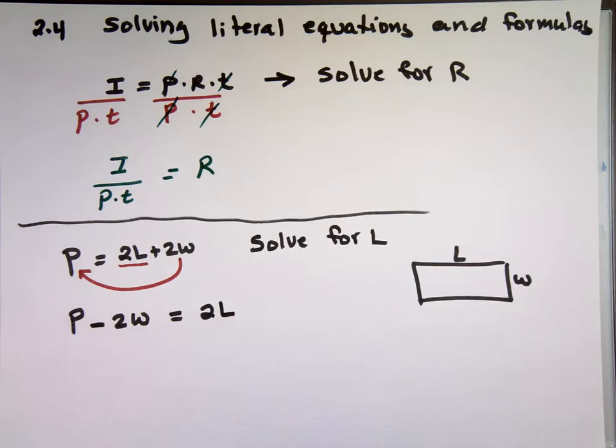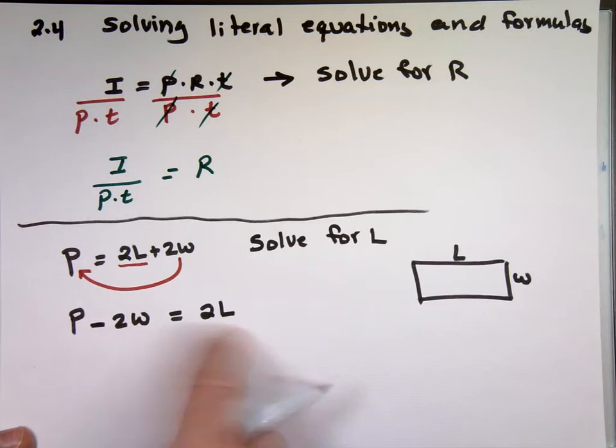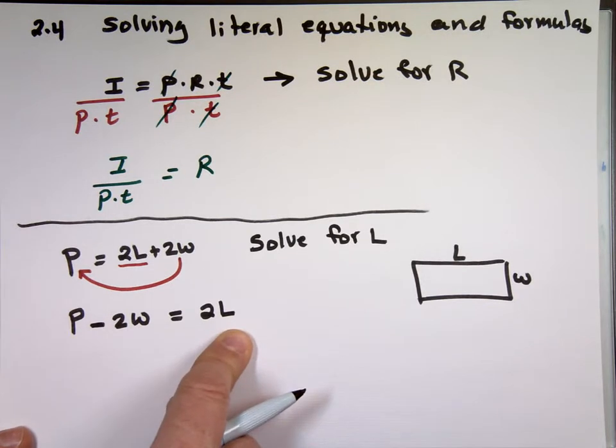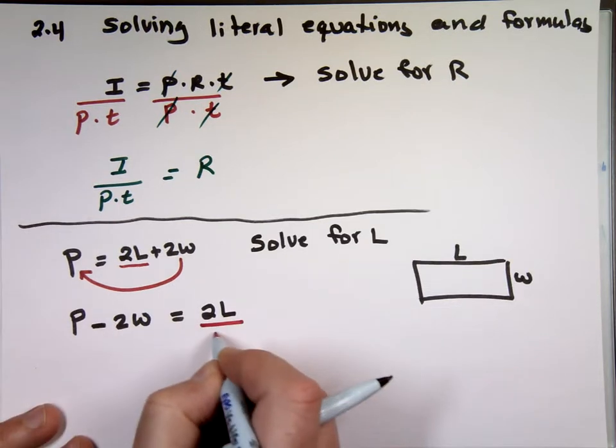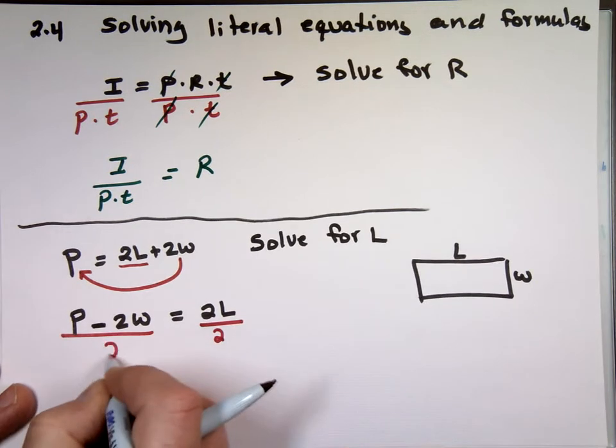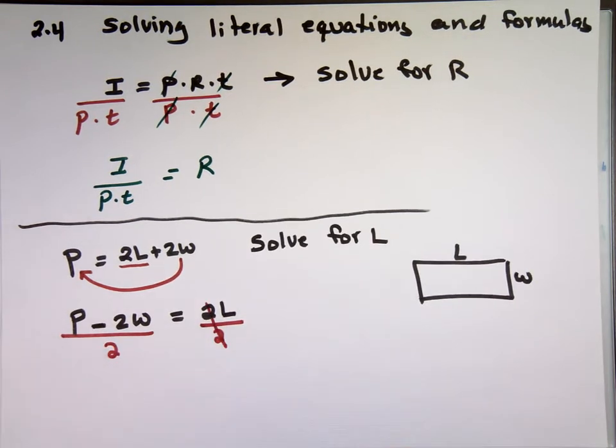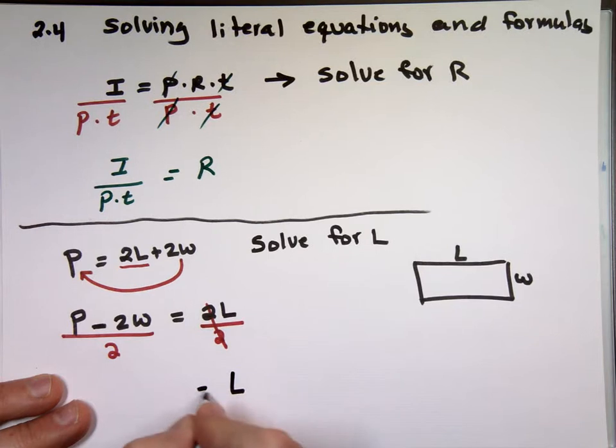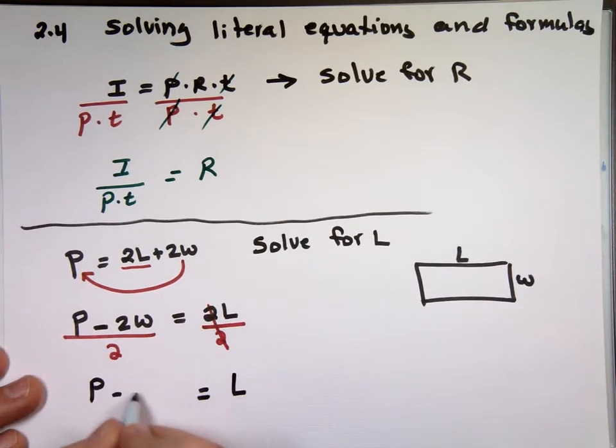So P minus 2W equals 2 times L. Again, you always want to isolate the variable you're trying to solve. We just did that, we isolated the L. There is no L here, only right there. Now that's a multiplication. What's the opposite to multiplication? So you got to divide this side by 2 to make it L, and minus 2W divided by 2.